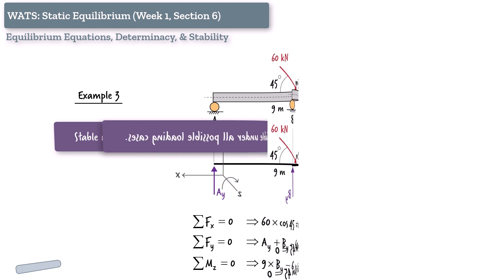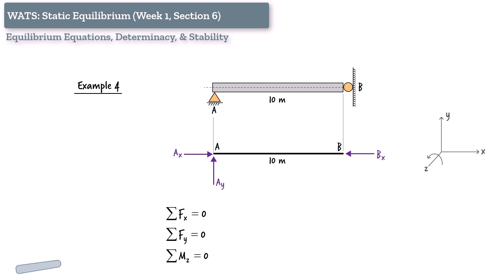Now, let's look at a beam supported by a pin at one end and a roller on a vertical surface at the other. In this setup, the pin provides two reaction forces, one horizontal, A-x, and one vertical, A-y. The roller, being on a vertical wall, provides a horizontal reaction, B-x.